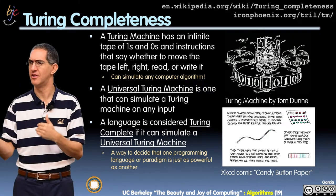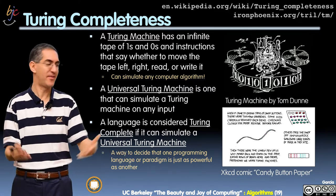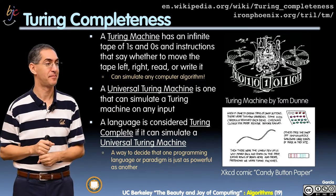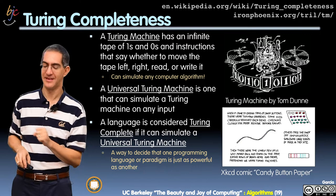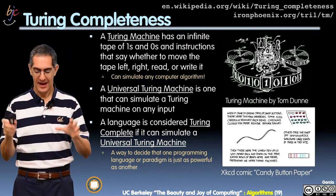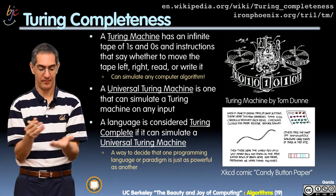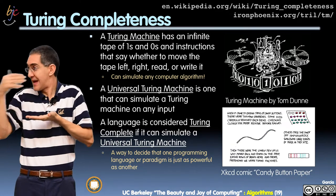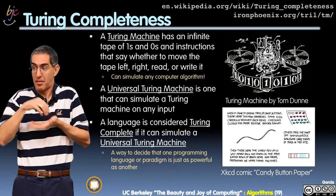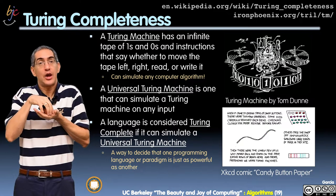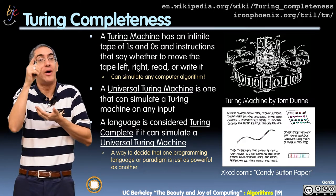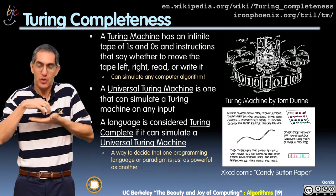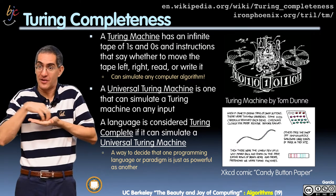How does that relate to languages, though? You just built a machine — this fake machine in the lab. That doesn't tell me about languages. Aha! Imagine the encoding of the brain — the algorithm itself, the what-you-do, the left, right, and so on — as being encodable in ones and zeros. Not crazy. So you encode the algorithm itself into ones and zeros.